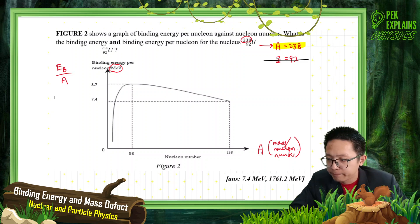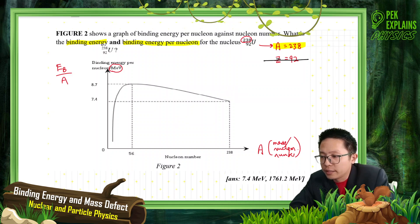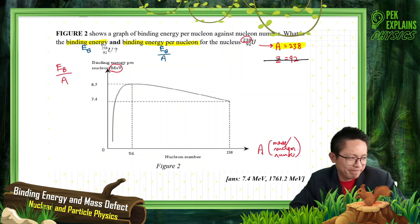Now, so the question wants the binding energy and binding energy per nucleon. So he wants to find the binding energy and binding energy per nucleon. So first, where is the uranium 238? Mass number 238?